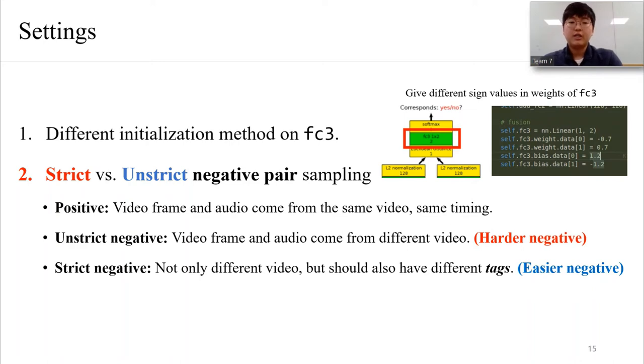Next is variation on negative pair sampling method. There are two methods: strict and unstrict sampling method, and they are shown below.